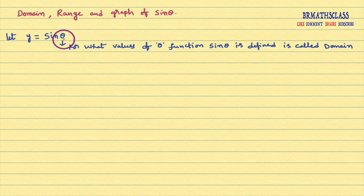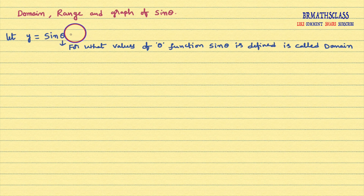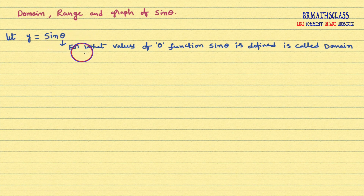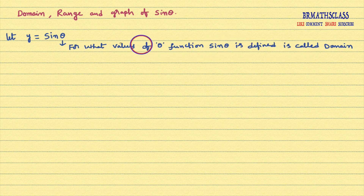For example, theta equal to 30 degrees — sin 30 degrees is defined. Theta equal to 90 degrees — sin 90 degrees is defined. Theta equal to 1000 degrees — sin 1000 degrees is defined. So for what values of theta the function sin theta is defined, that is called the domain of this function.